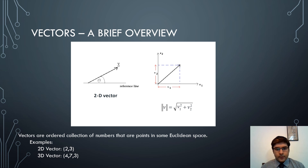A 2D vector example would be x and y axis points given as 2 and 3 respectively. A 3D vector example would be x, y and z axis points given as 4, 7 and 3 respectively.